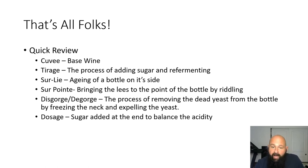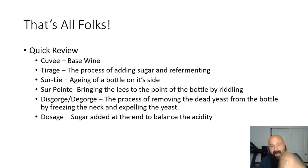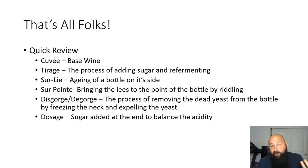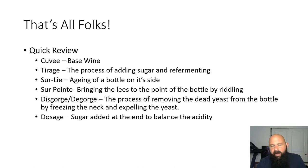Quick review: Cuvée is making a base wine. Tirage is the process of adding sugar and re-fermenting. Sur lie is aging the bottle on its side. Then we riddle — in a riddling cage, on a riddling rack, or just in a box upside down, kicking it occasionally — to get the yeast down into the neck. Disgorgement projects that yeast plug out of the bottle. Finally, dosage is the sugar addition at the end — usually a sucrose solution — sometimes with a little sulfur dioxide or liqueur to modify flavor.